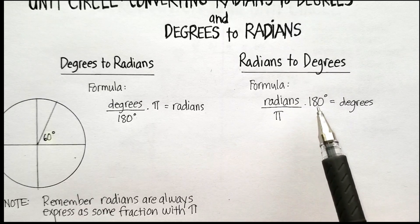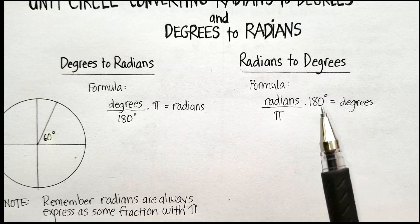Radians divided by pi times 180 will equal the number of degrees.